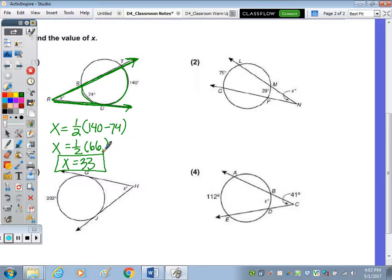Number two, we have two secants that intersect at point N outside the circle. These rays touch the circle twice. It goes with the arc of 75 and 29. So X is going to be half the difference. So subtract the two arcs divided by 2. 75 minus 29 is 46. Divide that in half. X is equal to 23.